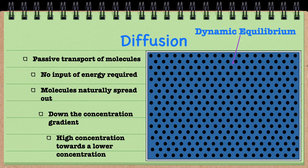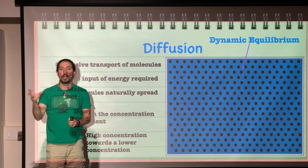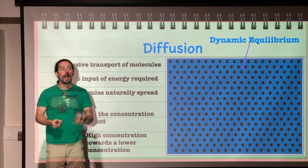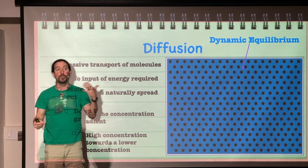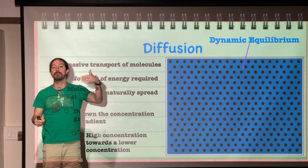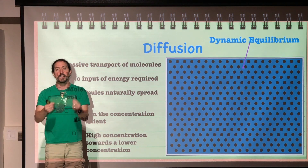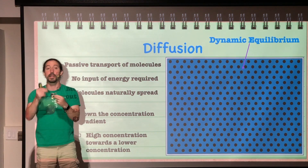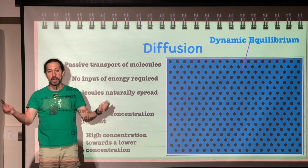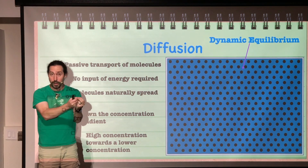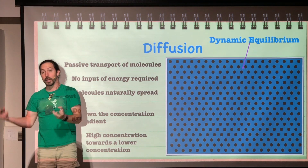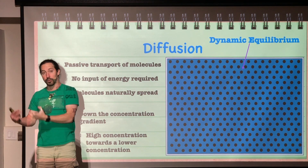Diffusion is molecules spreading out over space. For example, when someone puts on perfume in a room, you might not be next to that person, but over time you'll start to smell it. Those molecules spread from the area of high concentration where they were sprayed to the area of lower concentration where you are standing.